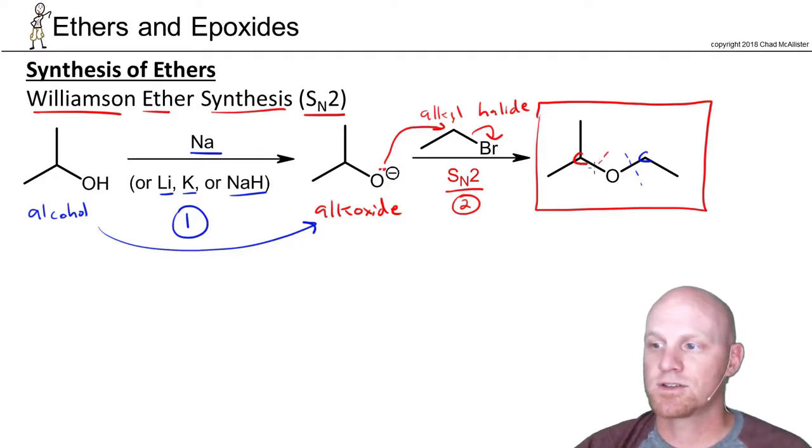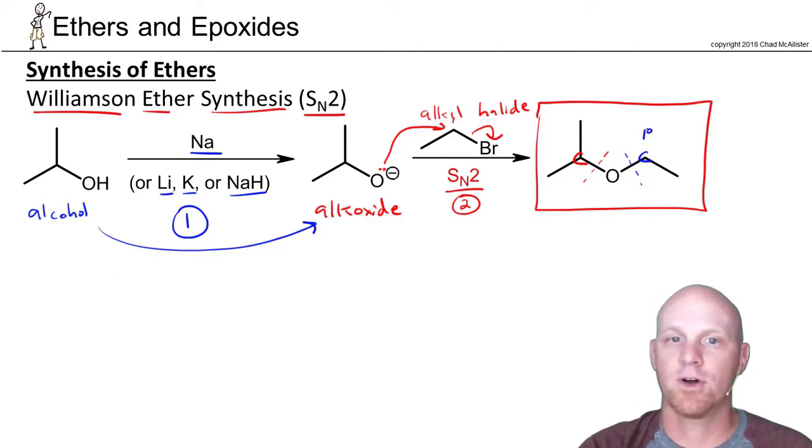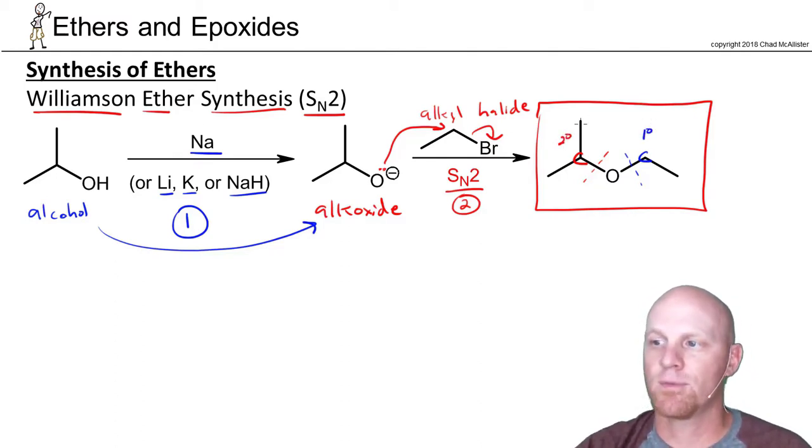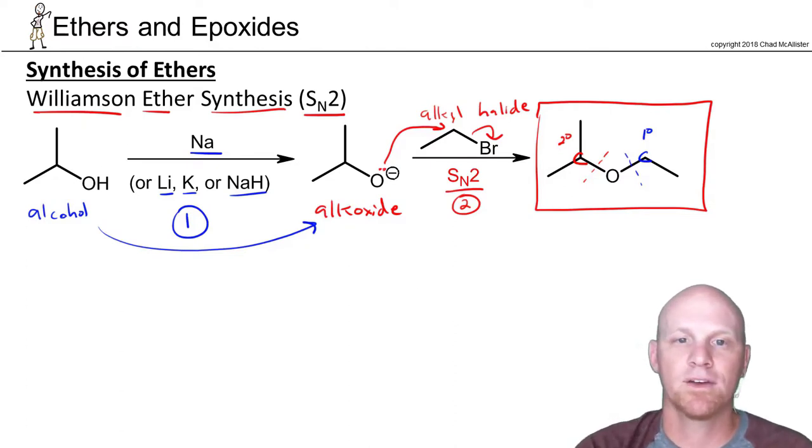And the question is which one gets to be the alkyl halide? In this case whichever side gets the oxygen is the alkoxide, the other side is going to be the alkyl halide. And so in this case we've got a primary carbon over here and then we've got a secondary carbon over here. And for SN2 the primary halide would be the best.